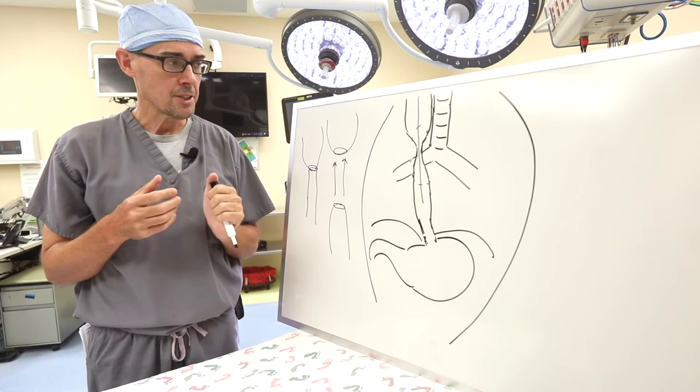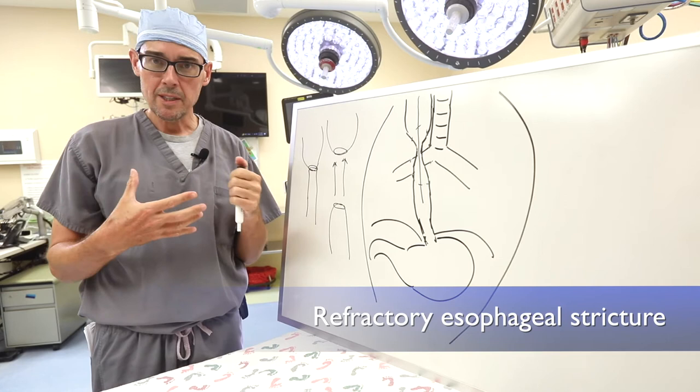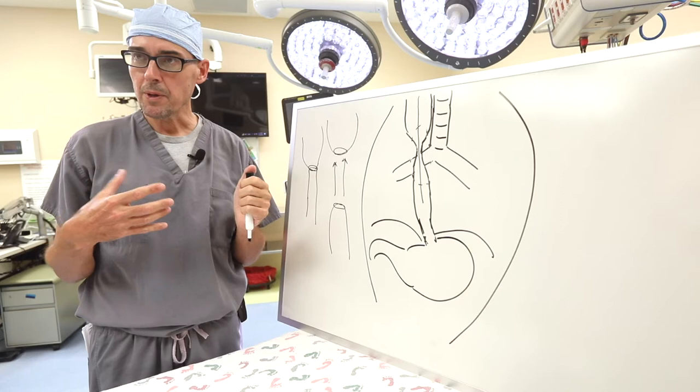The problem that we often find is children who have what we call a refractory esophageal stricture, meaning you're doing dilations, you're trying to do things to improve it, but it's not working. It keeps coming back.